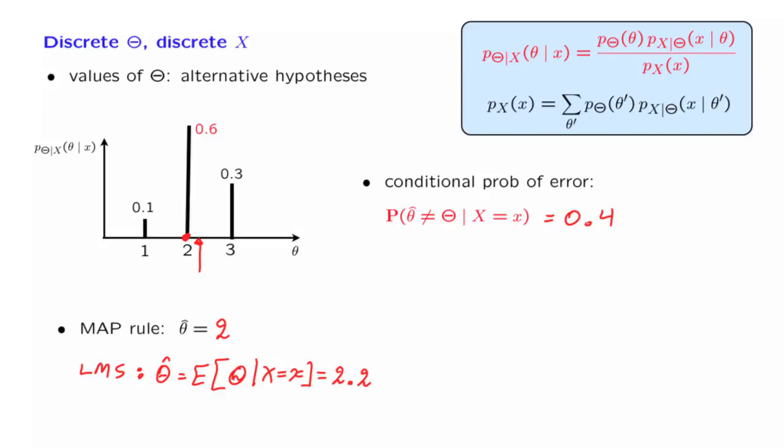If instead of an estimate equal to 2, we had chosen an estimate equal to 3, then the true parameter would be equal to our estimate with probability 0.3. But we would have made an error with probability 0.7, which would be a bigger probability of error. More generally, the probability of error of a particular estimate is the sum of the probabilities of the other values of theta.